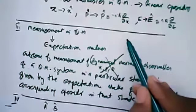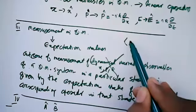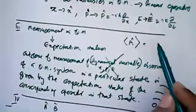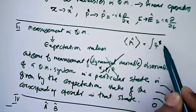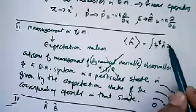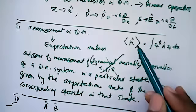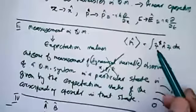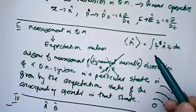The expectation value of any operator A is given by the integral of psi-star times A-operator times psi dx. You can substitute any operator for A. This is the way of finding the expectation value. Because this is a continuous variable, instead of summation we are using integration.